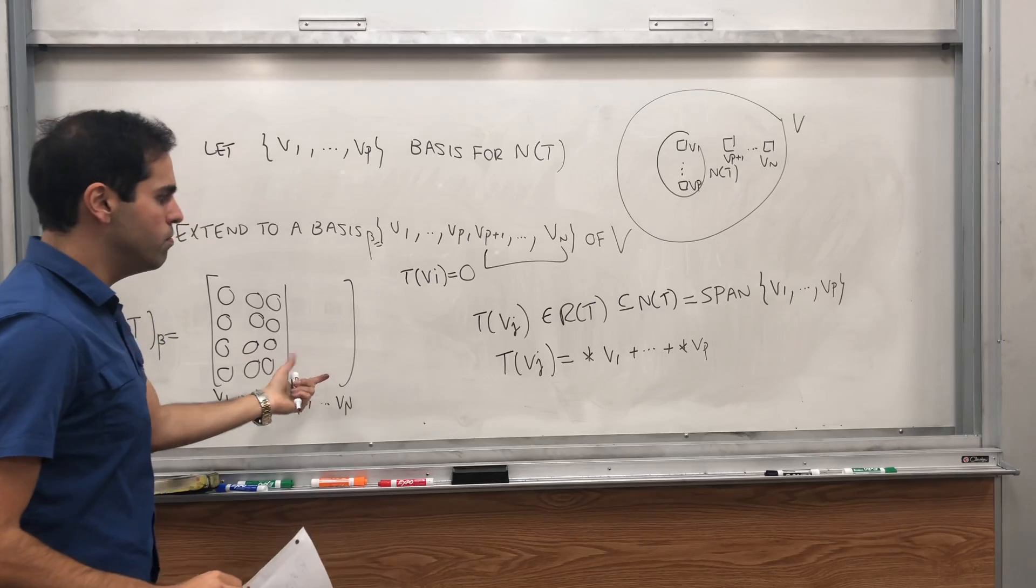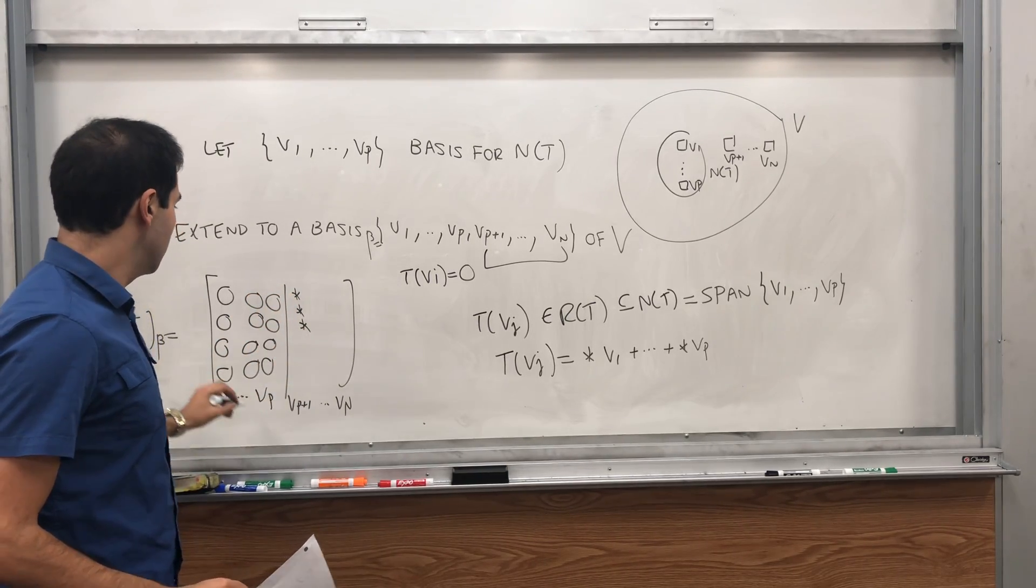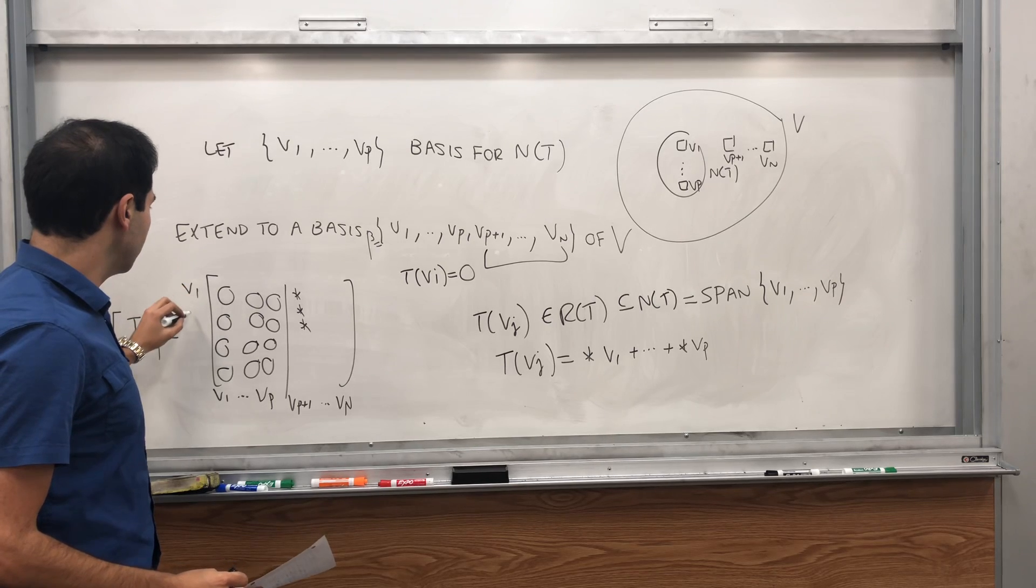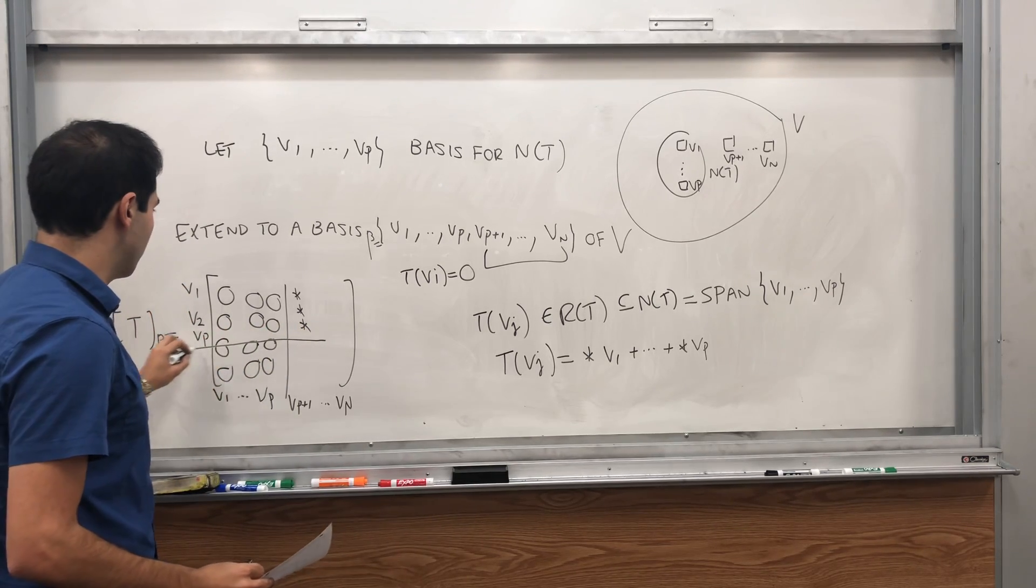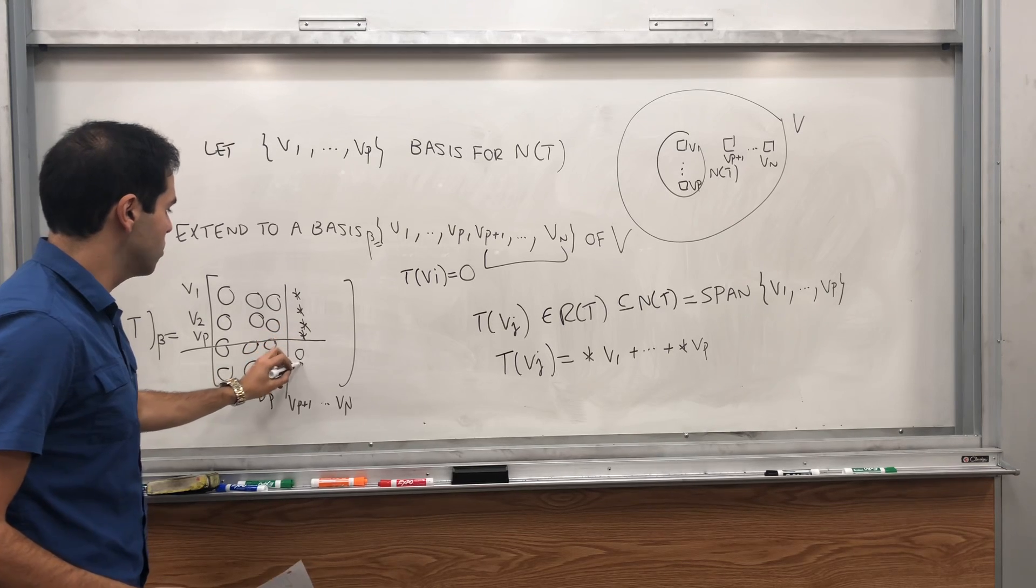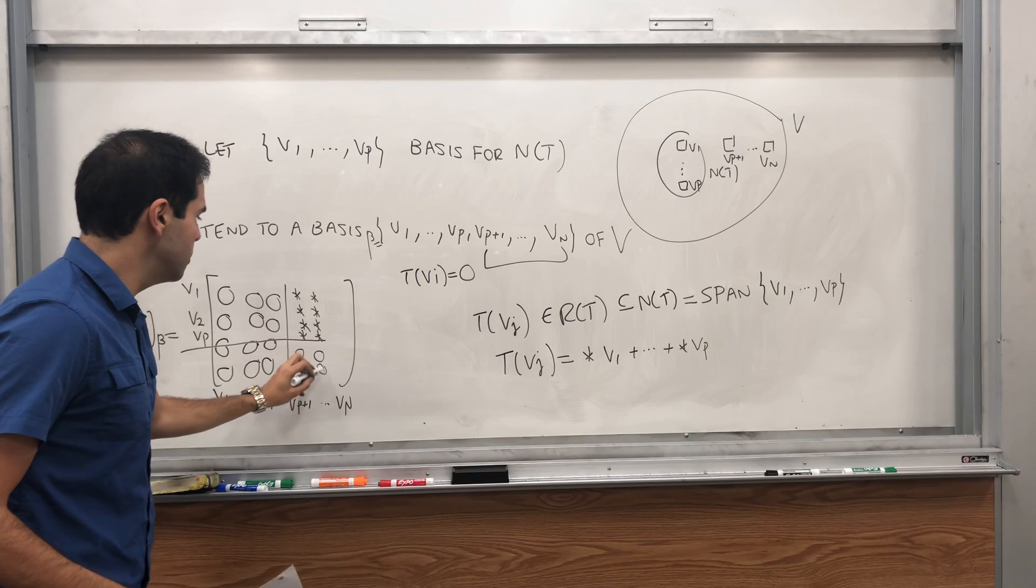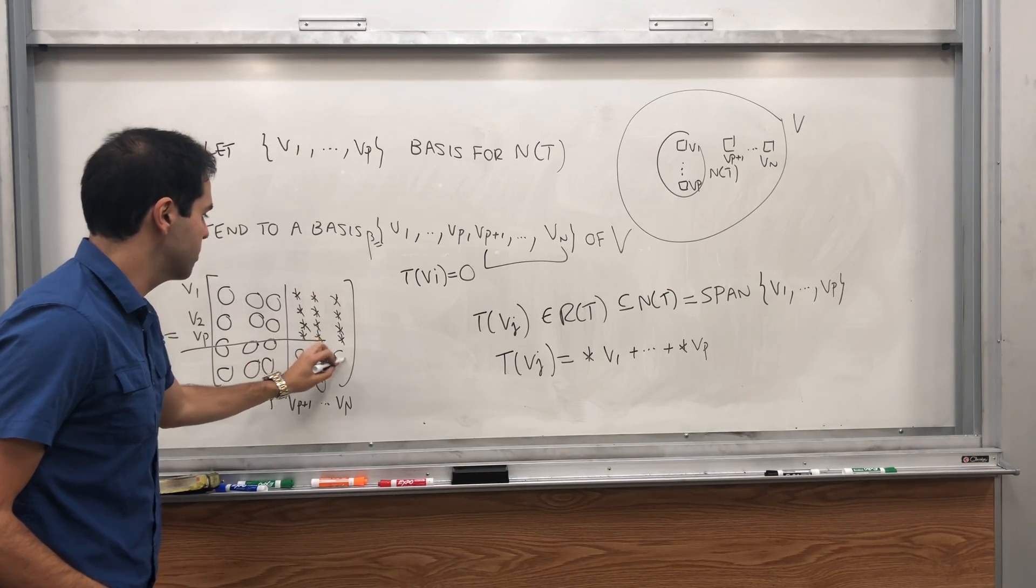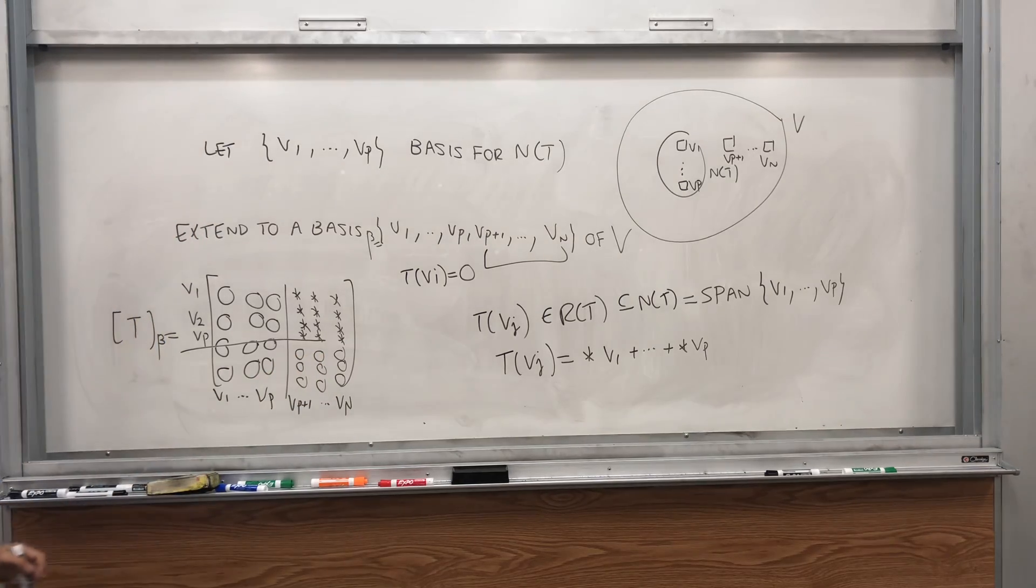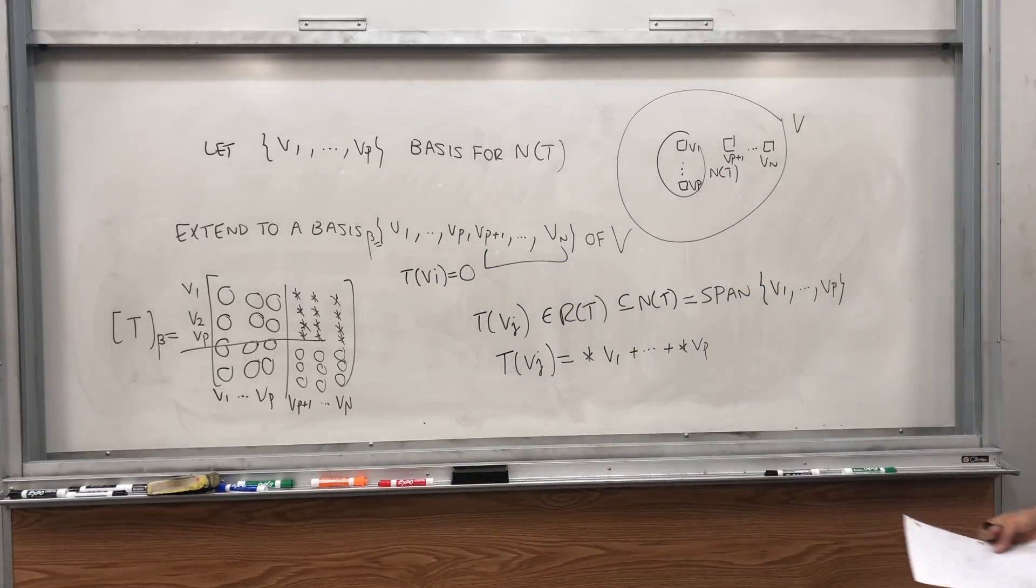Which tells us, to find our matrix, well, you might have non-zero values, but then, starting from the pth value, so I guess p plus first value, you just get a bunch of zeros. Which tells us that our matrix is actually just made up of a block matrix. And this is really how all the matrices whose square is zero look like. They have a bunch of zeros,